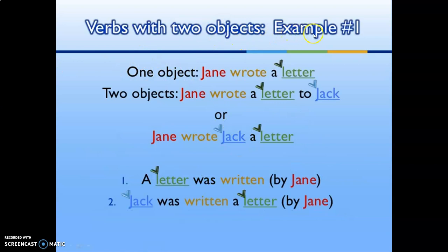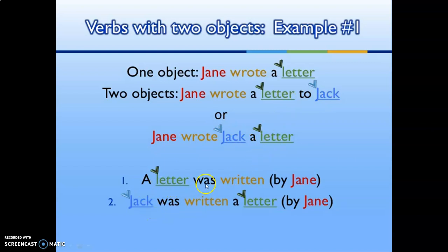Verbs with two objects, example one: 'Jan wrote a letter' (one object). With two objects: 'Jan wrote a letter to Jack.' In passive: 'A letter was written by Jan.' Alternatively: 'Jack was written a letter by Jan.'